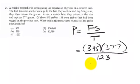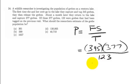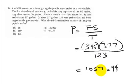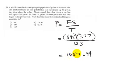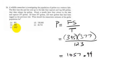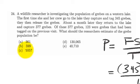If you evaluate that on your calculator, I get 1,057.44. But since we're talking about the population, we need to round that to a whole number. Looking at the answer choices, the closest one is C, 1,057.